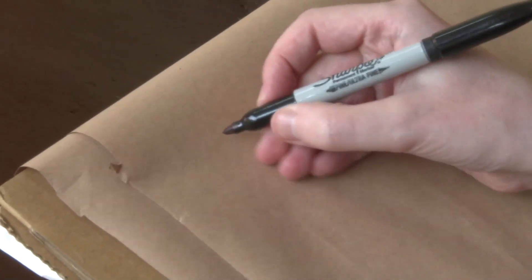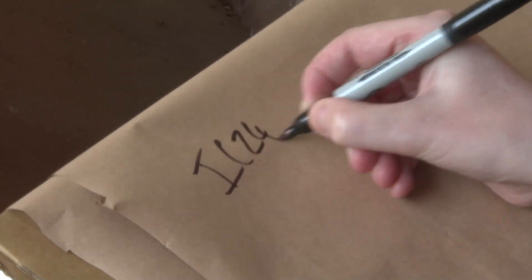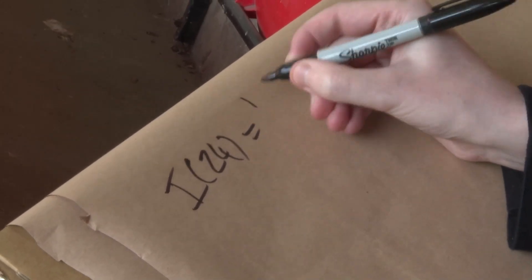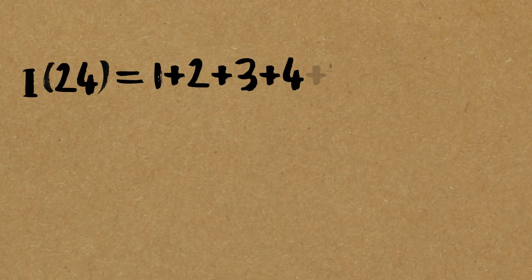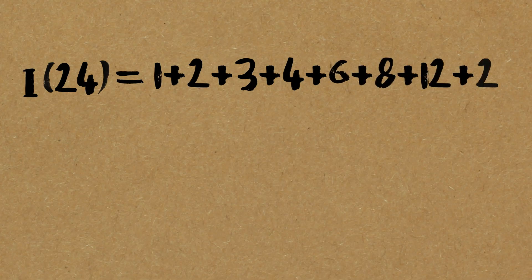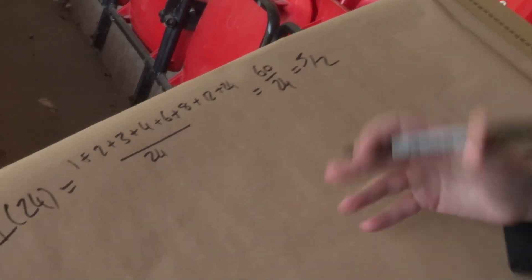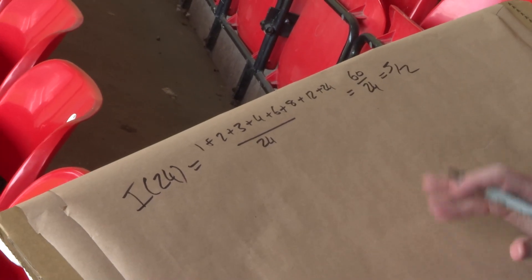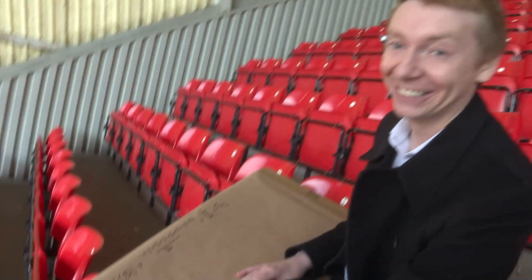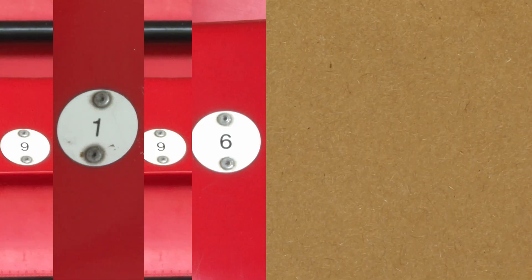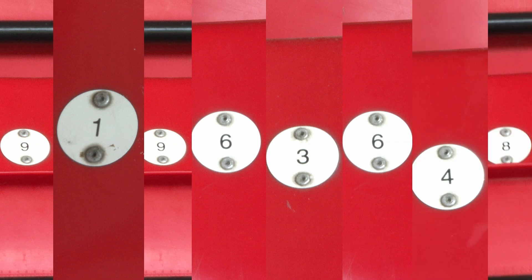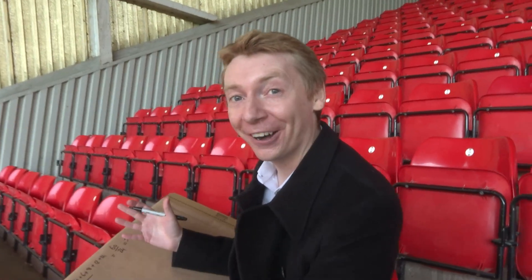Let's look at 24. The index of 24 — adding up the factors 1 plus 2 plus 3 plus 4 plus 6 plus 8 plus 12 plus 24 — gives 60 divided by 24, which cancels to five halves. If you want to find another number with that same index of 2.5, you have to search quite a lot. The next number with the same index is 91,963,648. Add up those factors, divide by the original number, and it has the same index — that's how far apart these numbers can be.